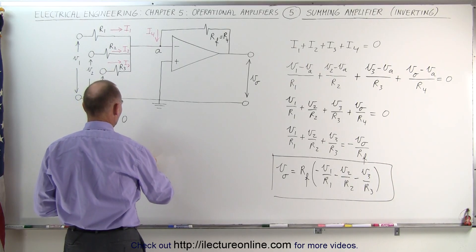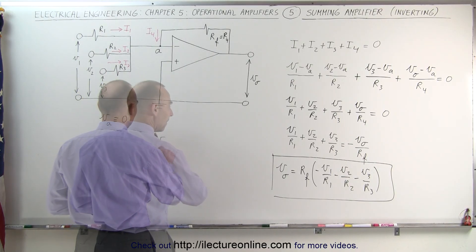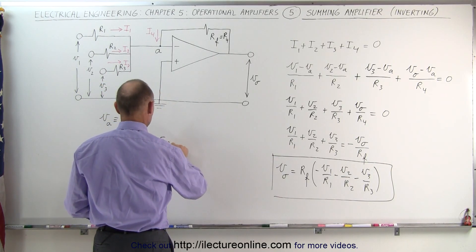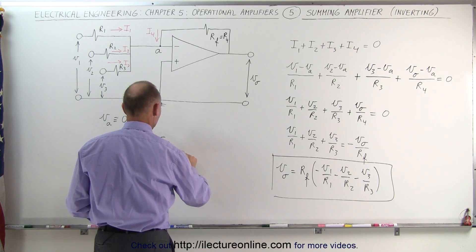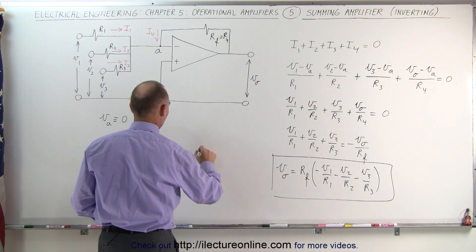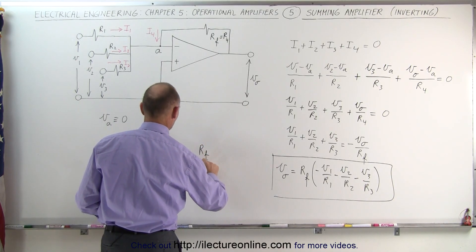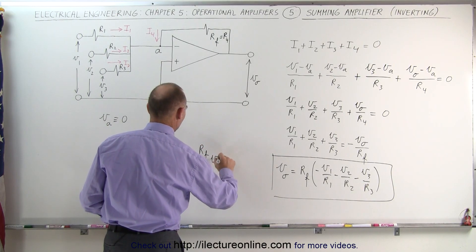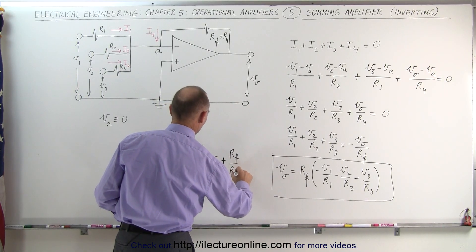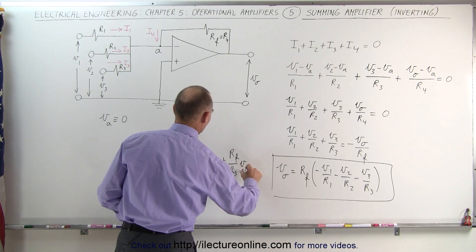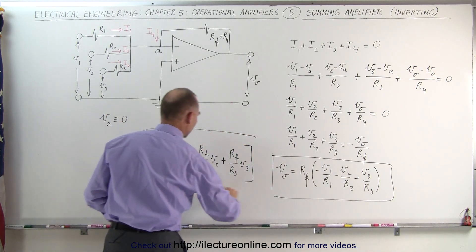We can say that the output voltage V sub O is equal to minus the gain factor R sub F over R sub 1 times V sub 1 plus R sub F over R sub 2 times V sub 2 plus R sub F over R sub 3 times V sub 3. So there's another way in which we can write the equation.